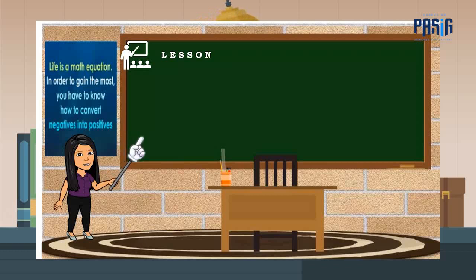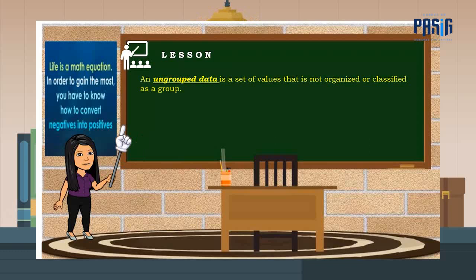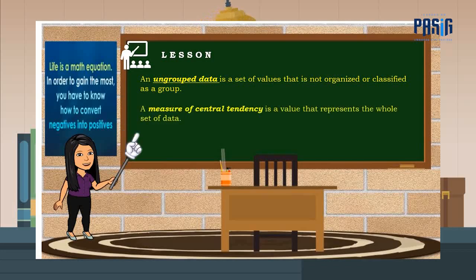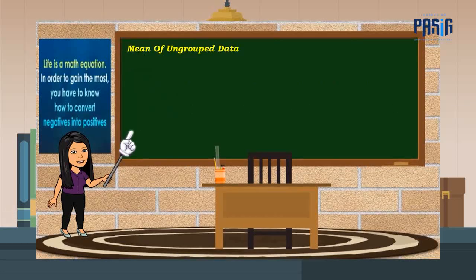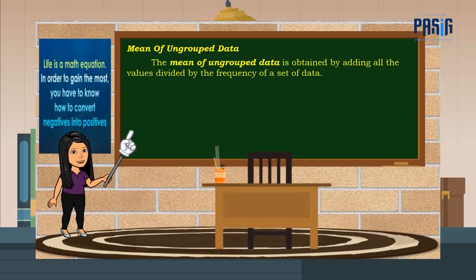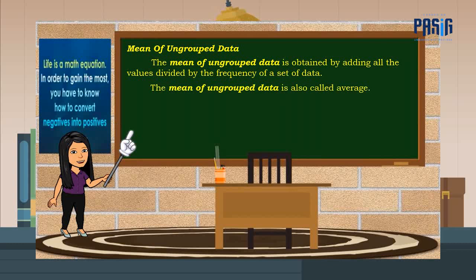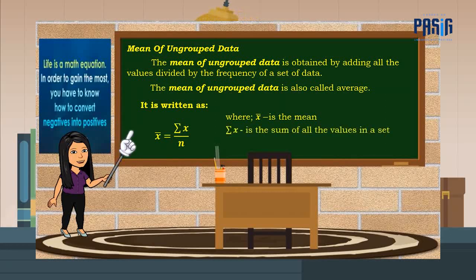You are now ready to learn the measures of central tendency. An ungrouped data is a set of values that is not organized or classified as a group. A measure of central tendency is a value that represents the whole set of data. These are mean, median, and mode. Let us now discuss the mean of ungrouped data. The mean of ungrouped data is obtained by adding all the values divided by the frequency of a set of data. The mean of ungrouped data is also called the average. It is written as follows, where x bar is the mean, summation of x is the sum of all the values in a set, and n is the frequency.